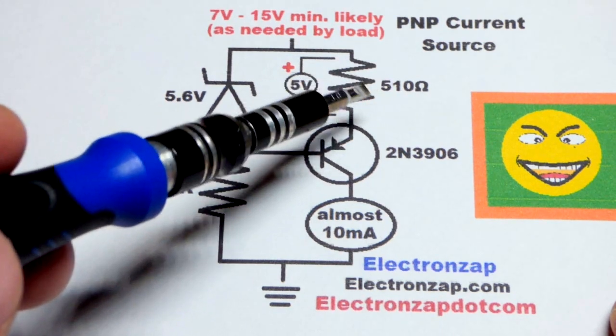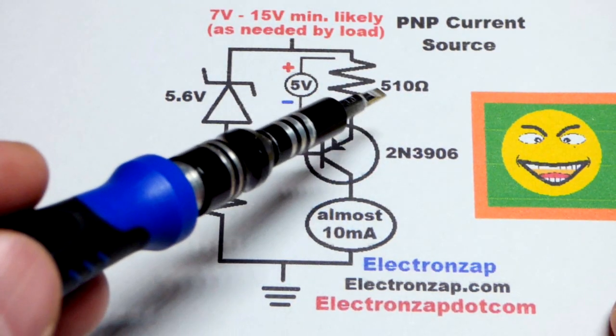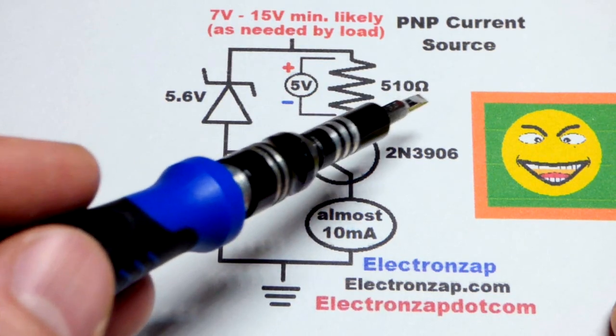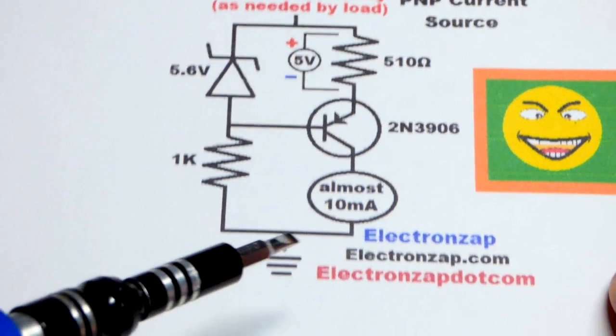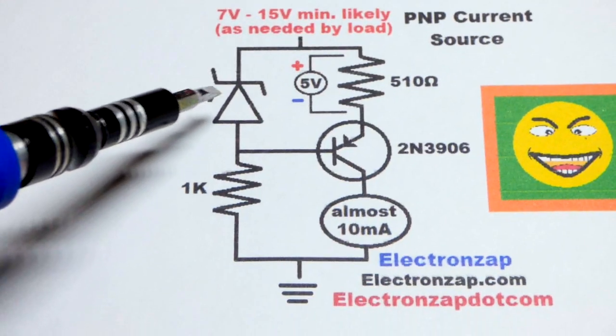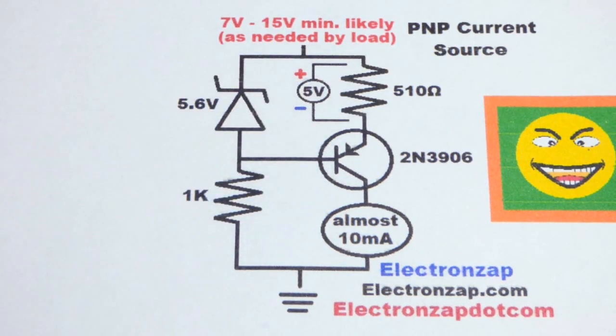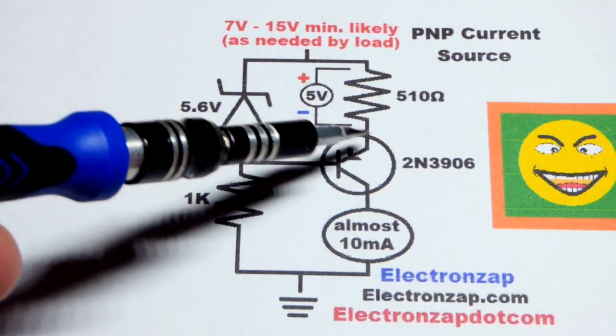I also changed the value resistor I'm using. Instead of a one kilo ohm resistor, we're going to use a 510 ohm resistor which is pretty much half the resistance. So we'll end up with twice the current. We have the zener diode over here to set the voltage we're going to put across the current setting resistor that's on the emitter side of the transistor.